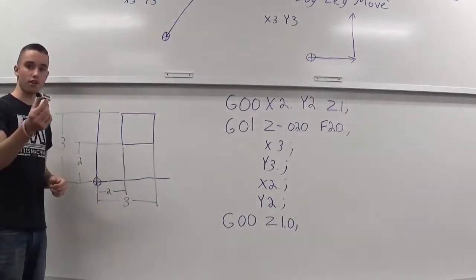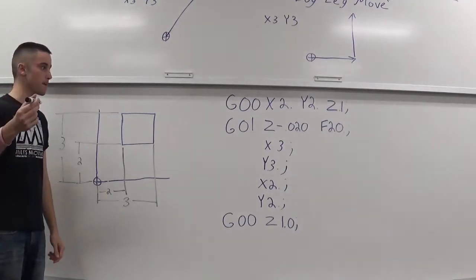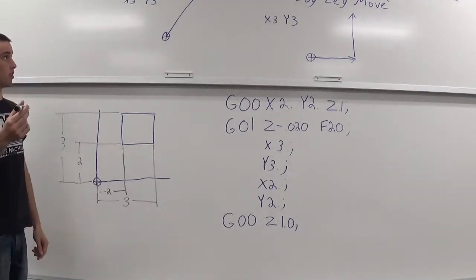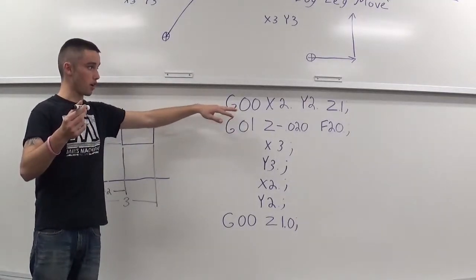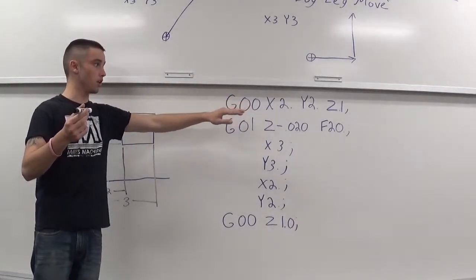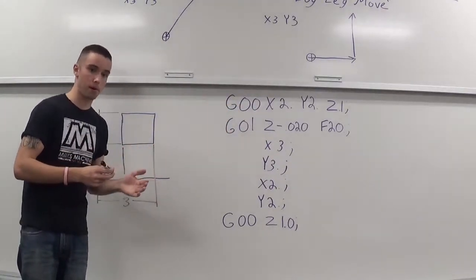This marker here is going to represent a quarter inch mill. So, I'm sitting here at machine home and I'm calling up a G00, which is my rapid straight line movement. I'm calling up an x of 2, y of 2, and a z of 0.1.